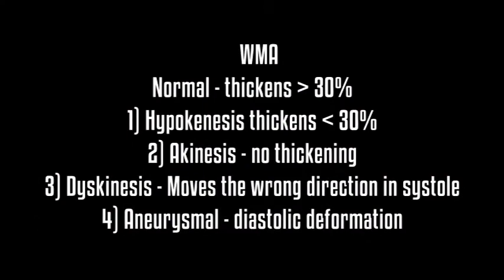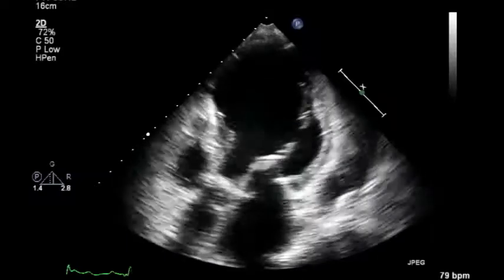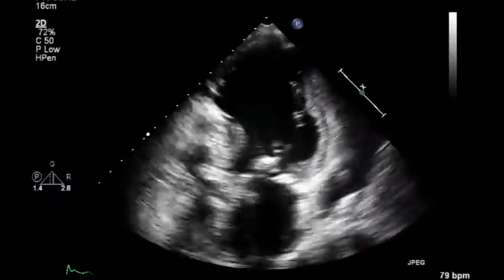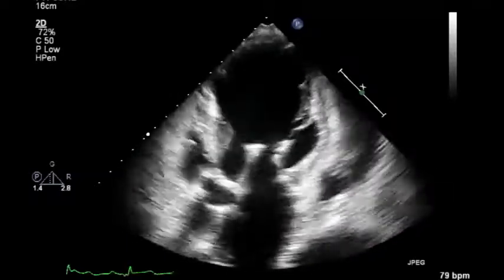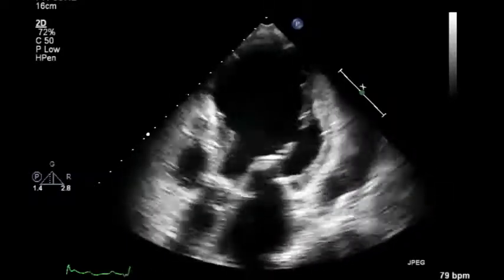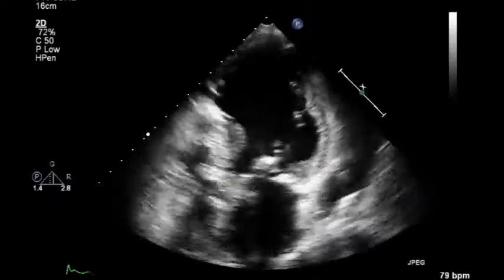Here's an example on the right of LAD hypokinesis. Notice how only the basal septum, which is supplied by the RCA, is thickening during systole.